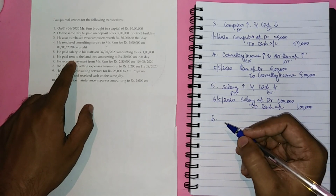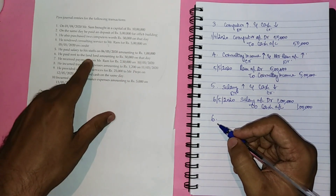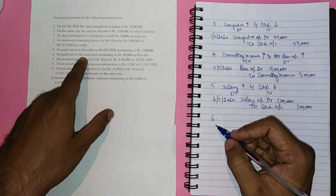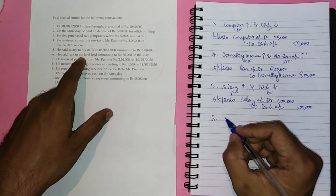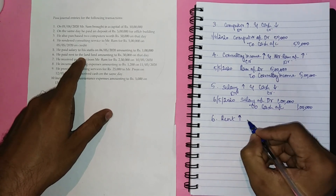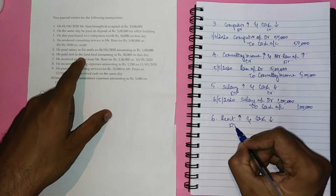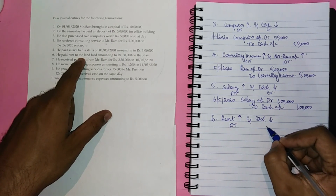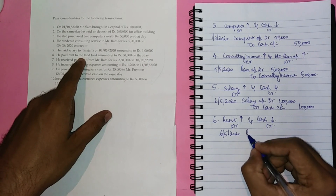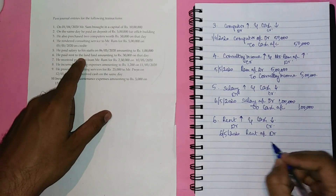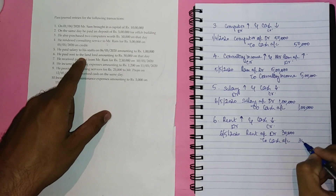The sixth transaction: he paid rent to the landlord amounting to Rs. 30,000 on that day. This transaction is more or less similar to the fifth transaction. He paid rent, so rent, an expense, is increasing, and he is paying through cash, so cash reduces. Rent, an expense being increasing, needs to be debited, and cash, an asset, since it decreases, needs to be credited. The entry is: on 6th May 2020, Rent account debit, to Cash account, Rs. 30,000.